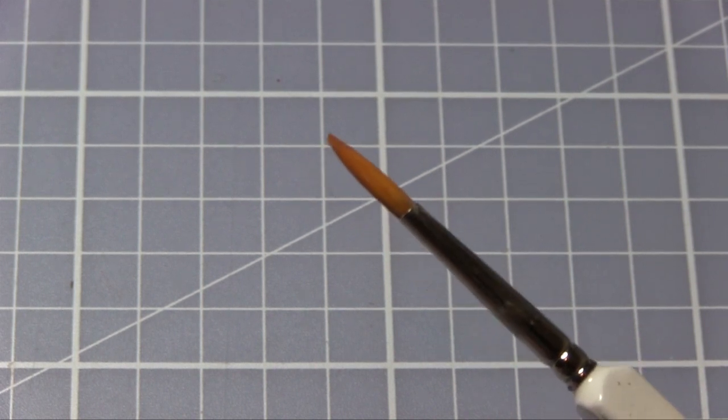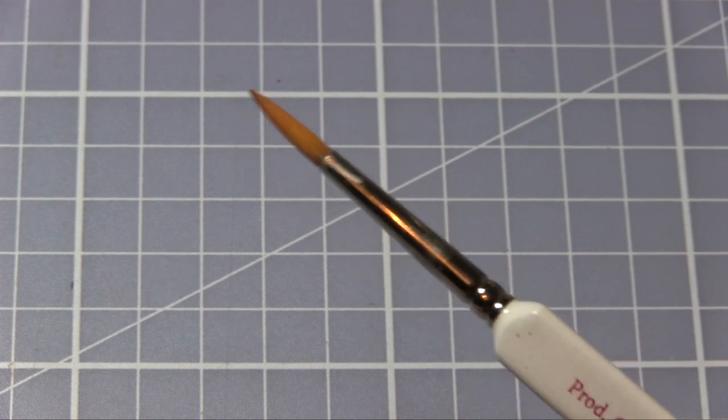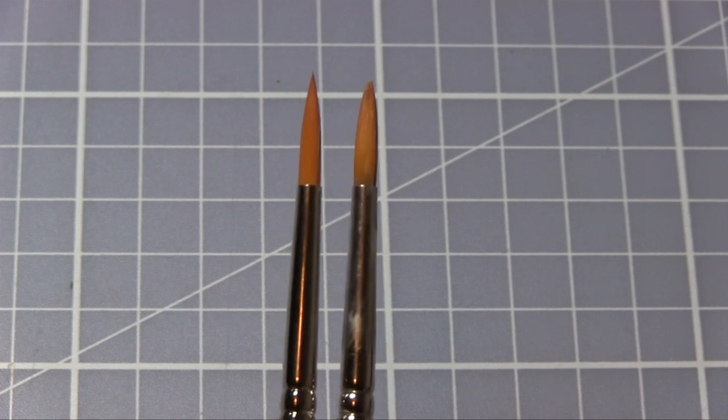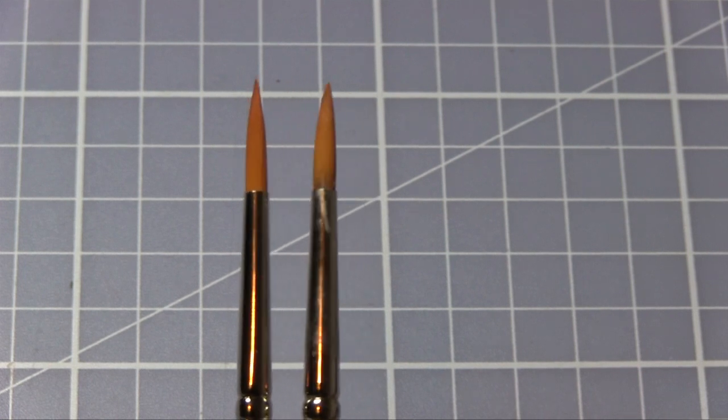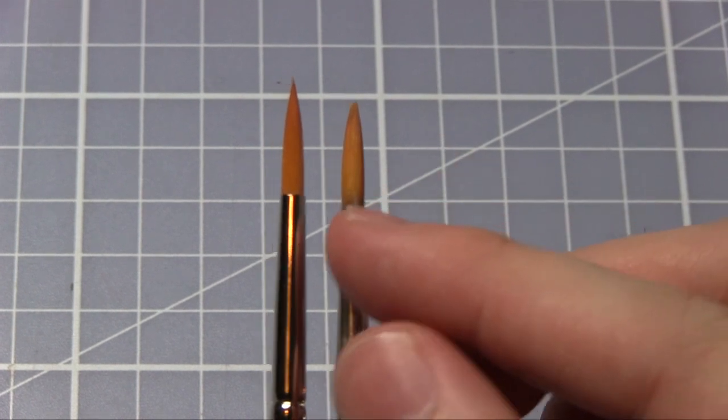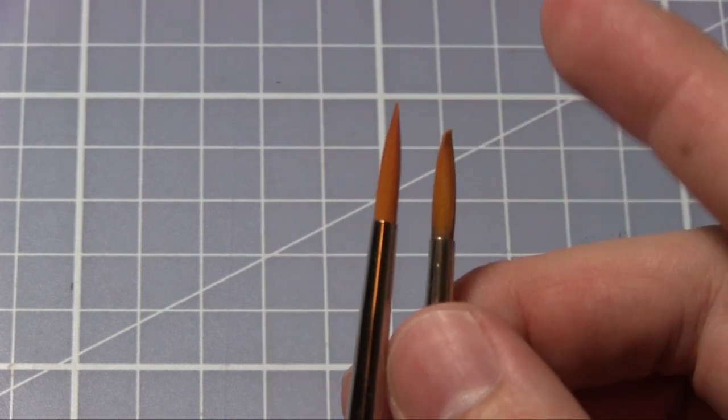I've been using it for about eight months now for applying quick shades and washes and also doing large areas of paint. If you compare it to the new one on the left here, you can see that it's still retained its shape pretty well. It's squashed out a little bit slightly but it's still pretty much the same as it was and it's still pretty soft.